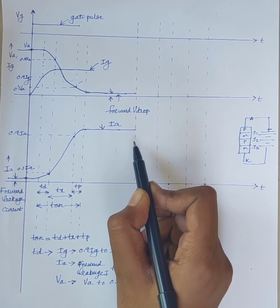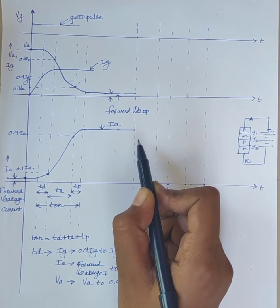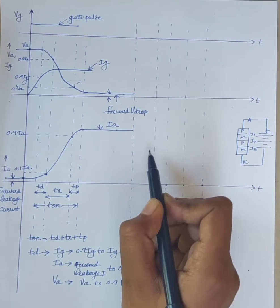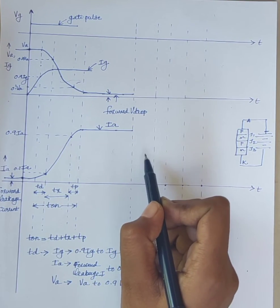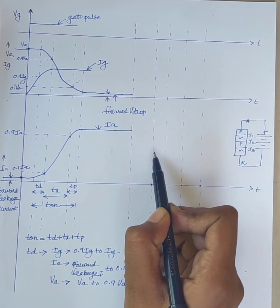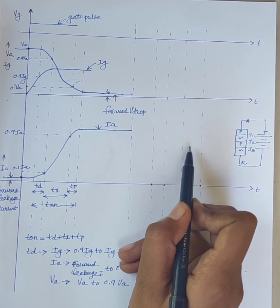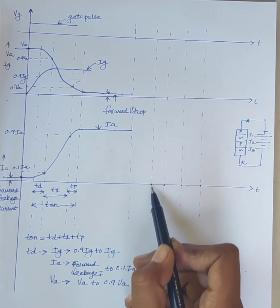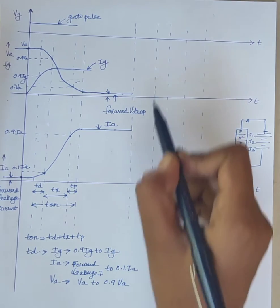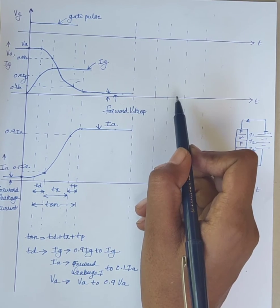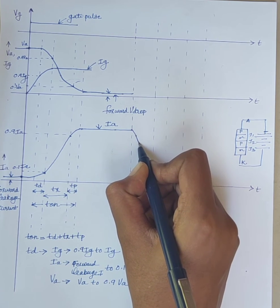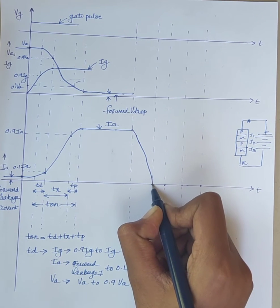So using suitable commutation method, we are going to turn off the SCR. Commutation is the process of turning off the SCR. When the switch changes from its on state to off state, current falls and the voltage increases. Anode current decreases and the anode voltage increases. Therefore, the anode current falls to zero.